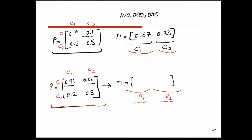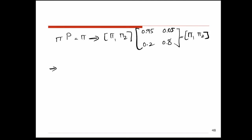Let's find pi 1 and pi 2 for this new transition probability matrix. The formula is: vector pi multiplied by the one-step transition probability matrix P equals vector pi. We multiply vector pi by the first column of matrix P, and similarly by the second column of matrix P.